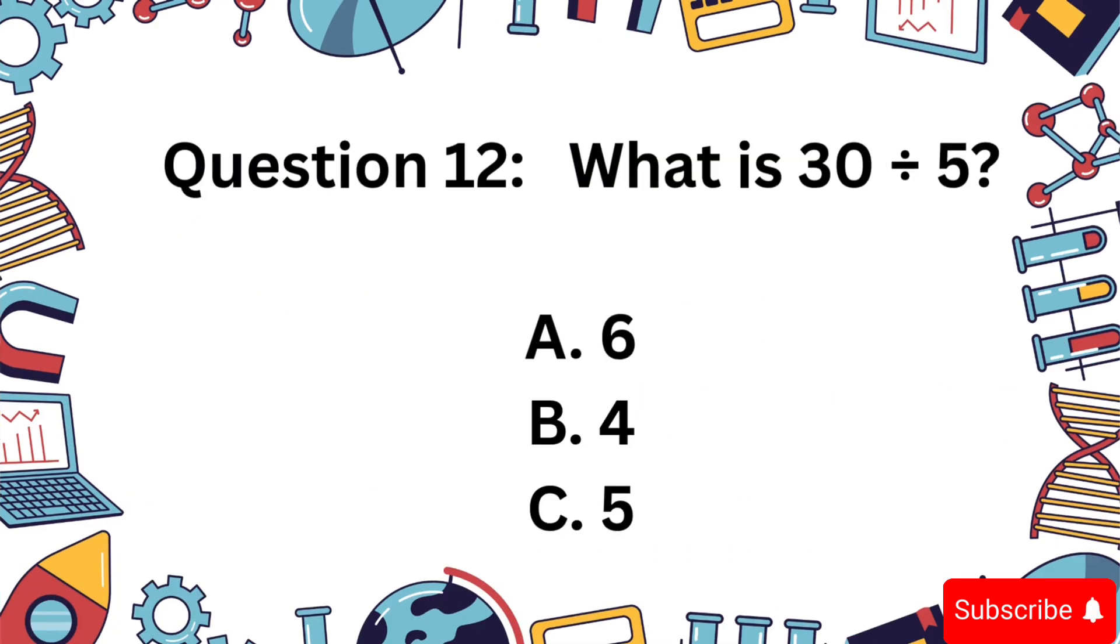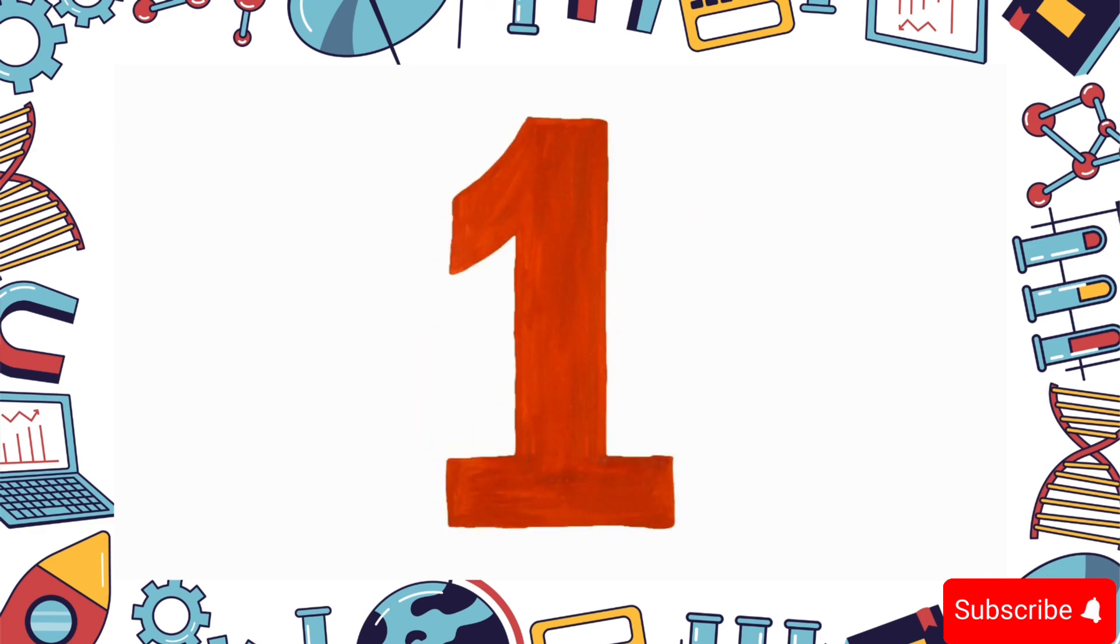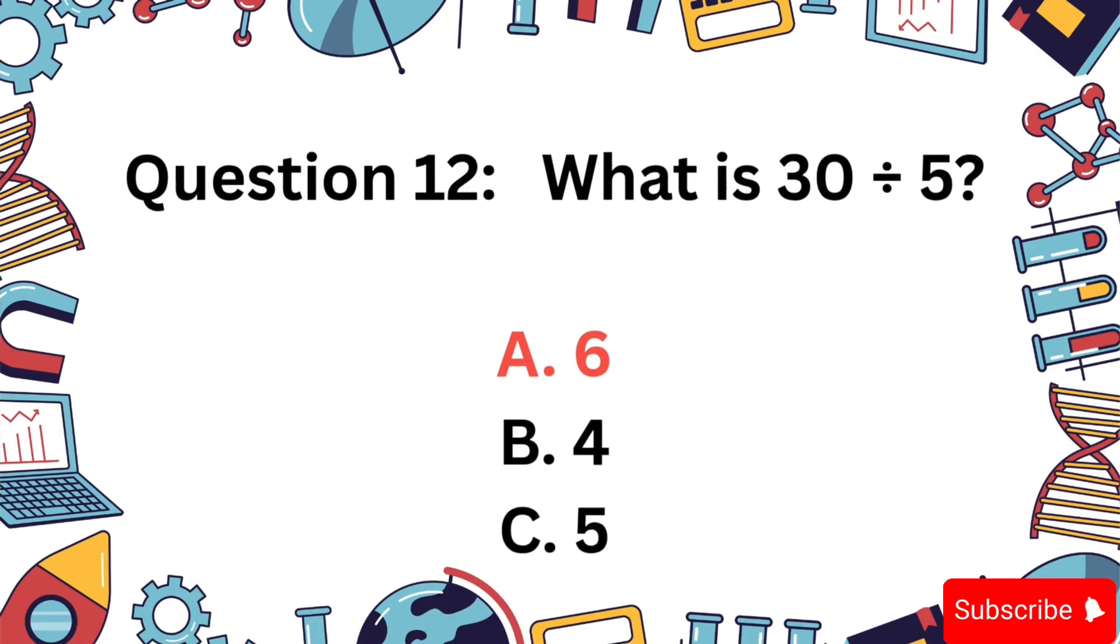30 divided by 5. A, 6, B, 4, C, 5? Correct answer is A, 6.